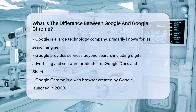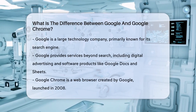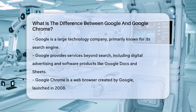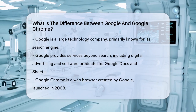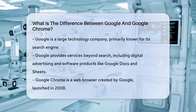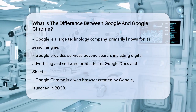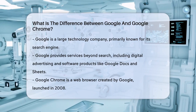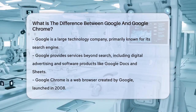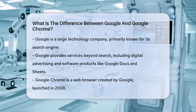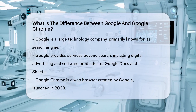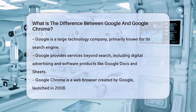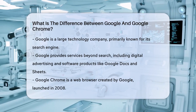Google is a massive technology company, best known for its powerful search engine. When you use Google, you're primarily searching for information across the Internet. Google handles a lot more than just searches — it also manages digital advertising, offers various software and hardware products, and provides services like Google Docs and Sheets.